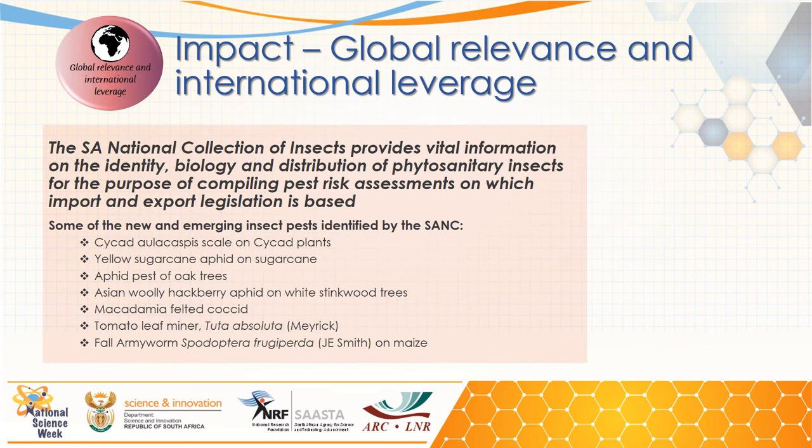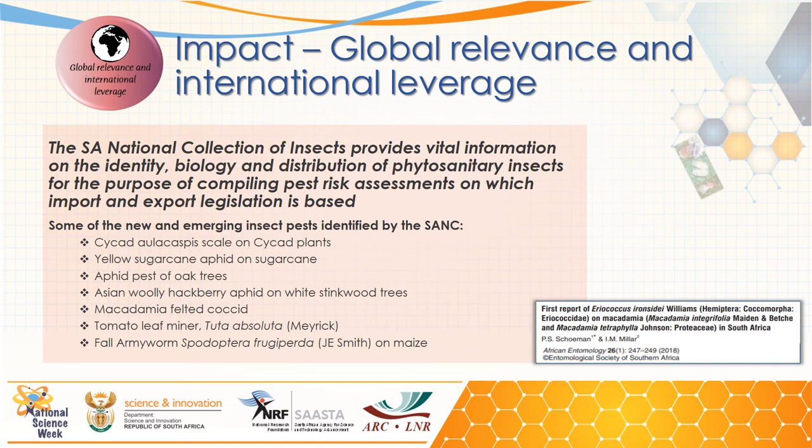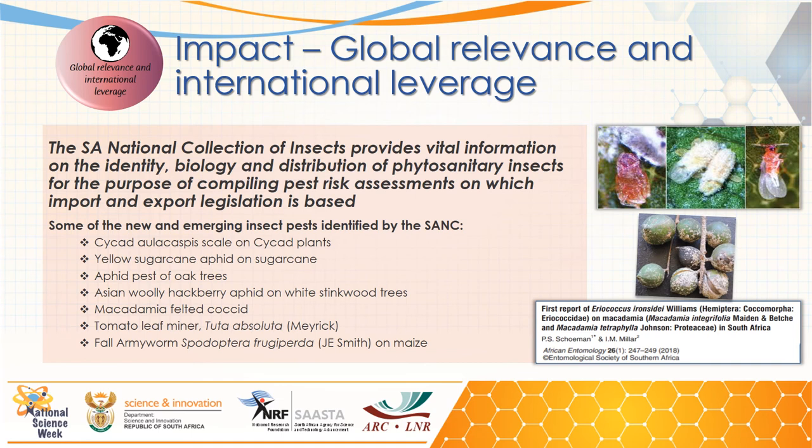The South African national collection of insects has helped provide important information on various phytosanitary pests over the last decade. The additional information of these pest records helps with compiling risk assessments used by governments. Two of these pests — namely the fall armyworm and Tuta absoluta — were identified at the ARC and have helped the ARC to do further research and provide training to farmers and government.